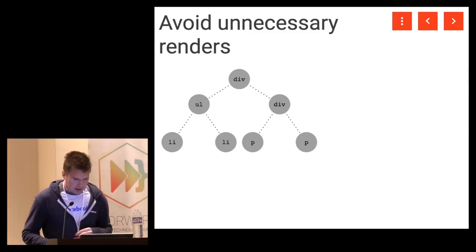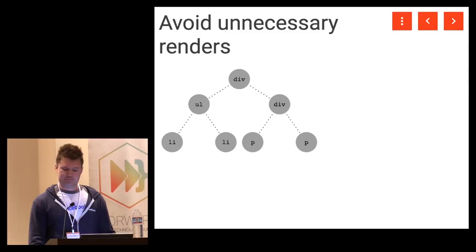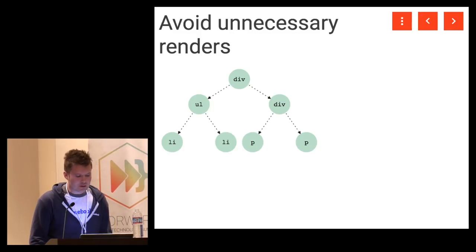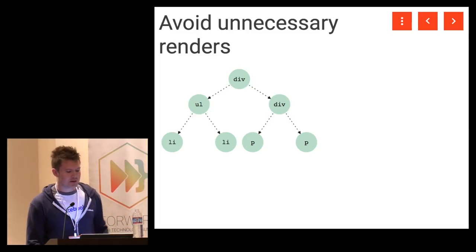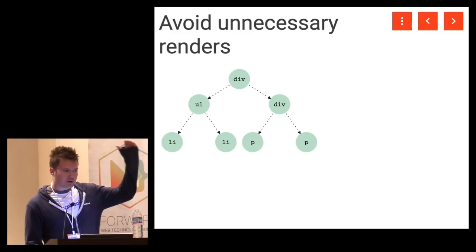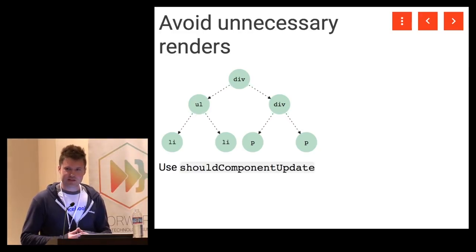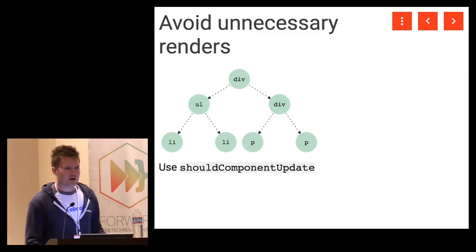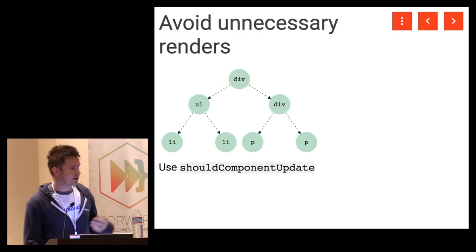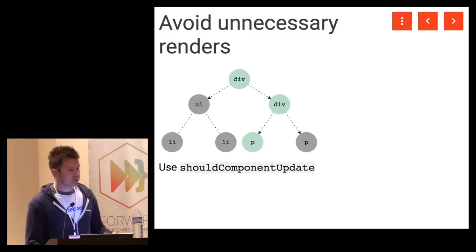Unnecessary renders are also a source of slowness. If we have a DOM tree and a setState operation at the top level, by default React is going to re-render that node and everything below it. If we have a big application and something sets state at the top level — say Redux — we don't want our entire application to render; it's going to be really slow. The solution is to use shouldComponentUpdate, which lets you say your component doesn't need to re-render because it won't change any DOM. React will skip all descendants of any component that says it doesn't need to update.